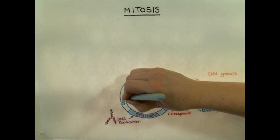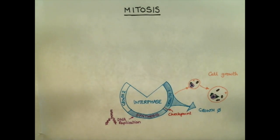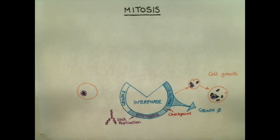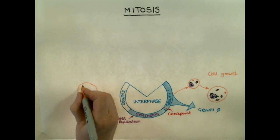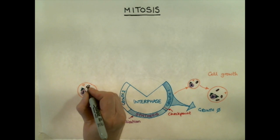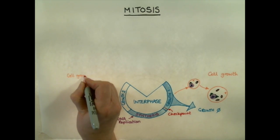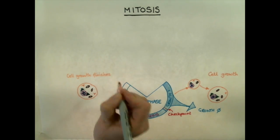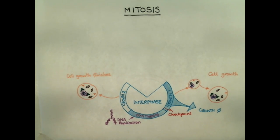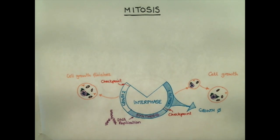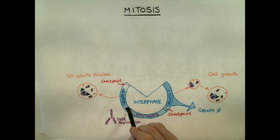Once in Growth 2, the cell continues to grow and produce additional enzymes and cell contents. Most importantly, the centrosomes — which orchestrate the movement of chromosomes during mitosis — also finish replicating. An additional checkpoint in Growth 2 once again assesses the state of replicating DNA, preventing the cell from continuing with the cell cycle if there has been damage to the DNA during the synthesis phase.